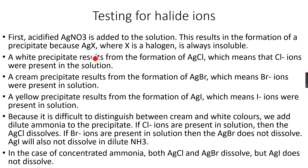Now, how do we test for halide ions? For example, if you are given a solution like NaCl, NaBr, or NaI — any salt solution — and you don't know which halide ion is present, in order to test for the halide ion, you add acidified AgNO₃. What happens is that the Ag⁺ ions from the AgNO₃ react with the halide ion X⁻ to give AgX.